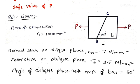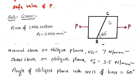In this case, we write the expressions for normal stress and shear stress on the oblique plane. Those expressions will contain the direct stress value. Using these two equations, we will get two stress values, and from those we find the safe load value P. We need to take the angle made by the oblique plane with the cross section of the bar.